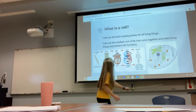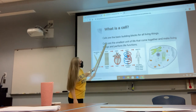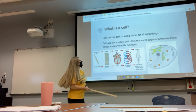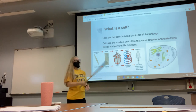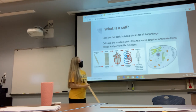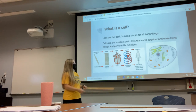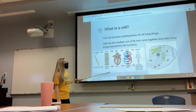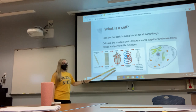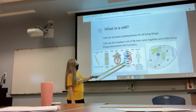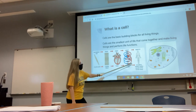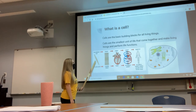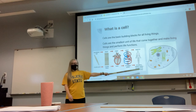Cells are the basic building blocks for all living things — the smallest unit of life that all come together to make living things and perform life functions. As you can see here, a muscle cell builds muscle tissue, which builds an organ like our heart, and then organs build systems, which build us as organisms — a multicellular organism. There are many different steps that make up a human.